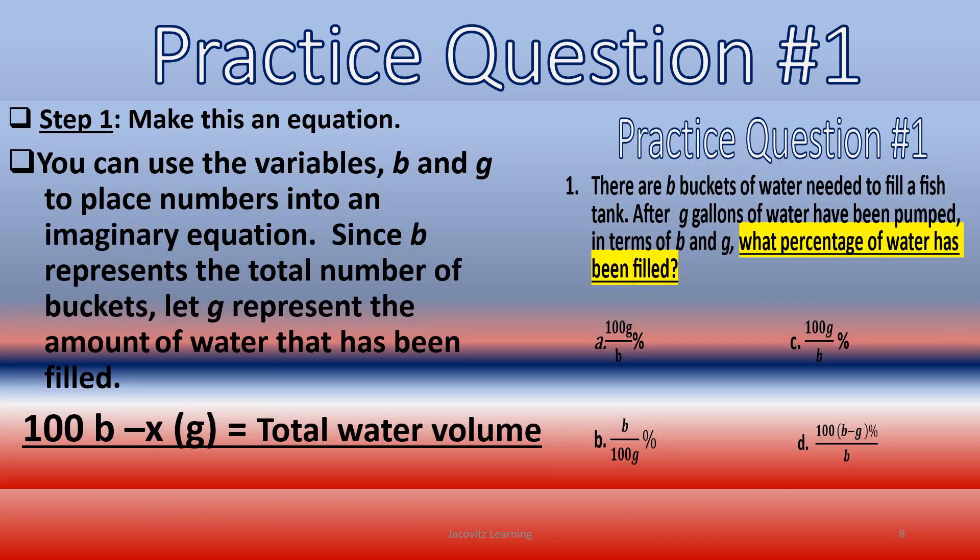You have to make it an equation. You can use the variables B and G to place numbers into an imaginary equation. And for those of you who took Algebra 2, I don't mean using imaginary or composite numbers, I just mean make up your own equation. If you don't like the one I gave you, try to work through one. But this is an example. Since B represents the total number of buckets, let G represent the amount of water that has been filled. 100B minus X times G equals the total water volume. And in this situation, X is going to be an unknown variable. The equation is on the side so you can look through it.